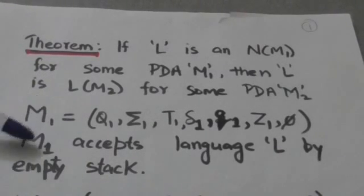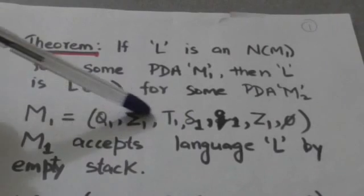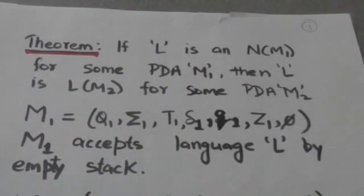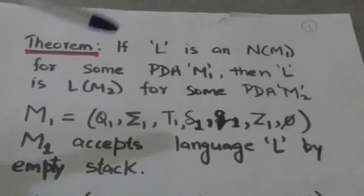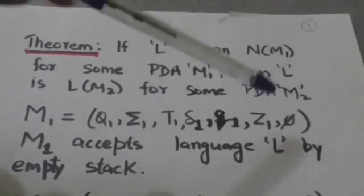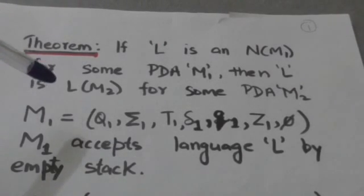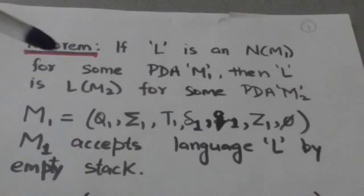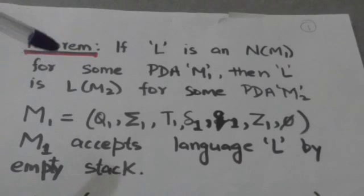Suppose there is a pushdown automata M1 which accepts the language L by empty stack. M1 is described by a 7-tuple. M1 doesn't have any final state. Q1 is its initial state, Z1 is the start symbol of M1, delta1 is its transition function, and Q1 is the set of all states of pushdown automata M1.